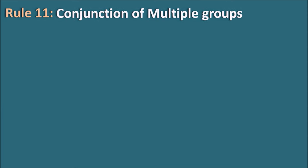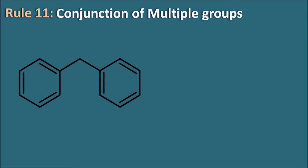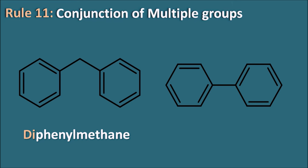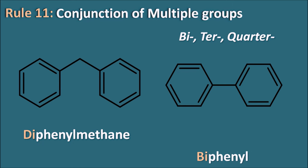Rule 11: conjunction of multiple groups. Two aromatic rings attached via a single carbon use 'di' — giving diphenylmethane. But when two phenyl groups are directly bonded without any carbon between them, we use 'bi', 'ter', 'quarter' instead of 'di', 'tri', 'tetra'. Two directly bonded phenyl groups become biphenyl — a compound name, not a radical. These terms indicate rings attached by single bonds.